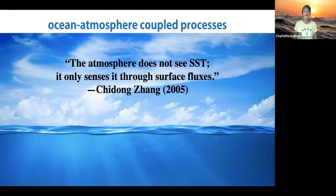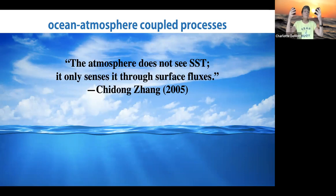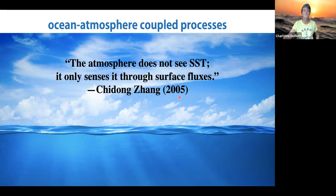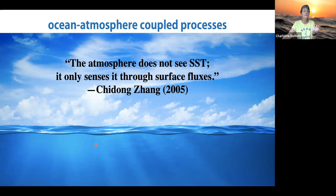This slide frames the problem of ocean-atmosphere coupled processes. In the background is an image showing tropical convection in the atmosphere with clouds and sunshine coming down, and the lower part shows the upper ocean, with the air-sea interface in between. There's a key statement from Chidong's 2005 review paper: the atmosphere does not see SST. It only senses it through surface fluxes. So even if the ocean is heating up, the atmosphere does not see the SST directly—it sees it through its effect on surface fluxes.